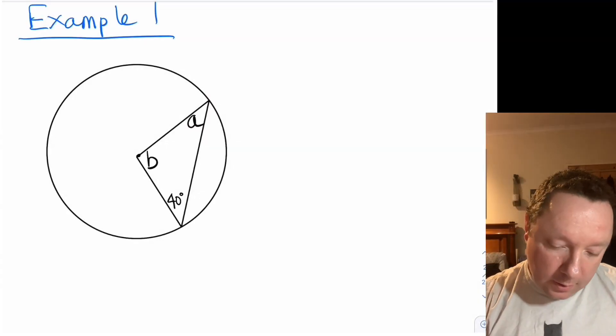Example one. We have to work out the size of angles a and b, so the first thing we always do is we identify our center, which is here. I'll call that O and we identify the lines which are the same.